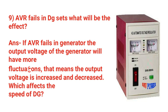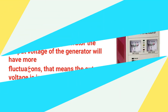Next question: If AVR fails in a DG set, what will be the effect? If AVR fails in the generator, the output voltage of the generator will have more fluctuation — that means the output voltage will increase or decrease, which affects the DG speed.